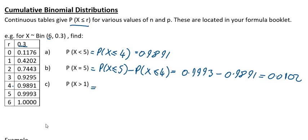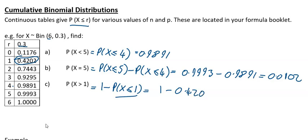It gets a little tricky when you have greater-than inequalities. P(X > 1) is the same as 1 minus P(X ≤ 1). In this case P(X ≤ 1) is 0.4202, so the answer is 1 minus 0.4202, which gives 0.5798.